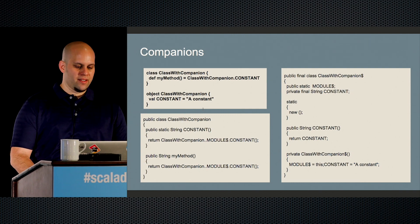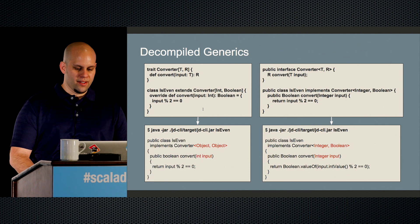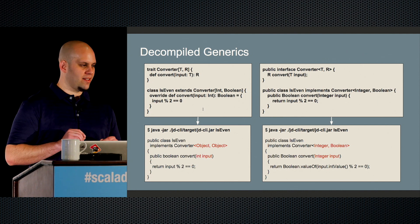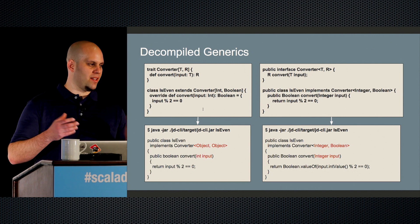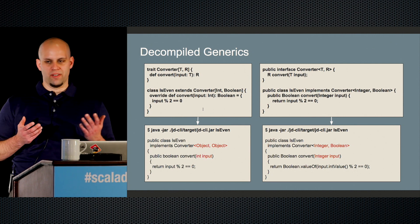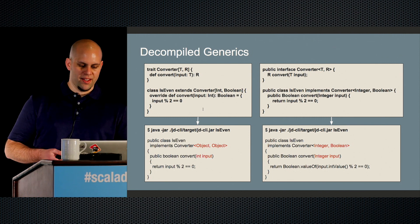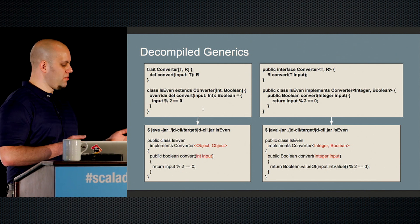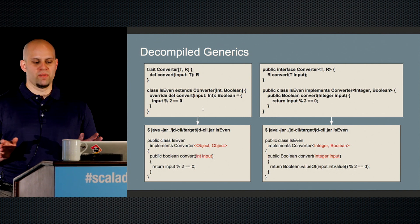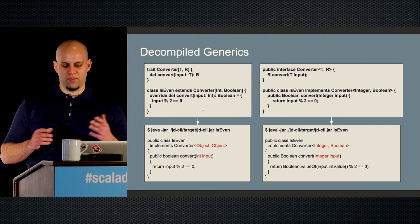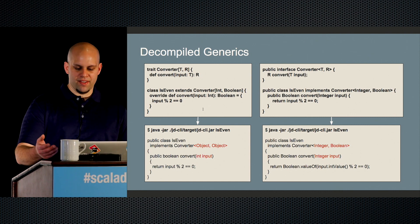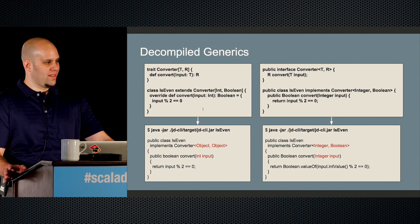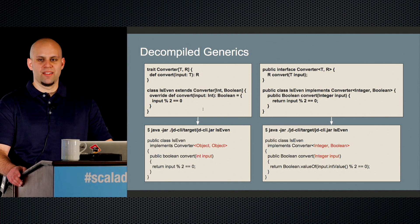This is my favorite example of the whole presentation. In the upper-left box is Scala code where I have a trait of type T and R, with a simple function — convert — that consumes a T and produces an R. My simple class IsEven consumes an Int and produces a Boolean: if mod two equals zero, that's true. In Java, I can have the exact same code: an interface instead of a trait with one method, convert, and the same logic implemented in a simple class. But when I decompile the .class file that gets put out, it's considerably different.